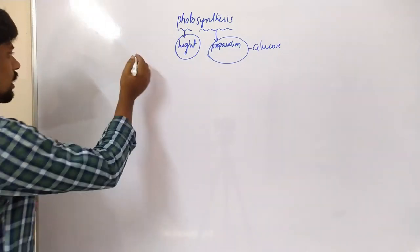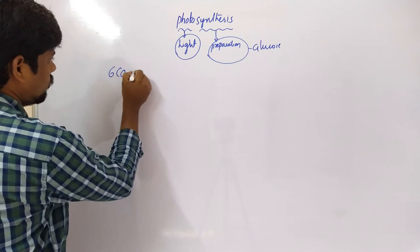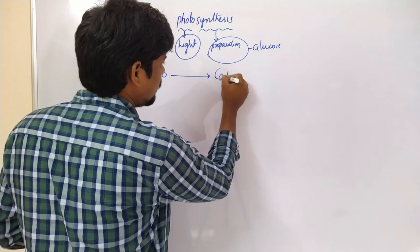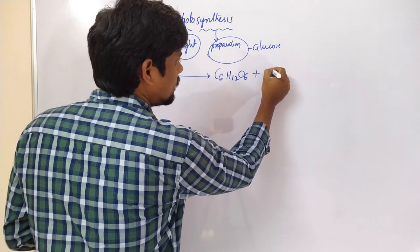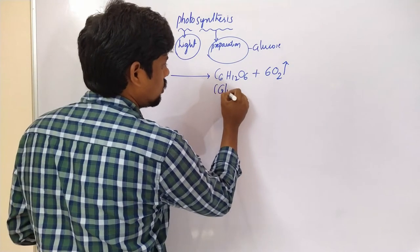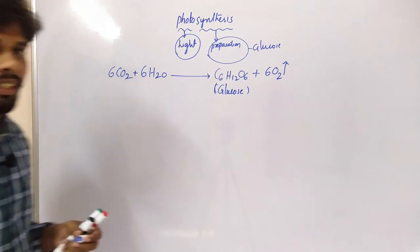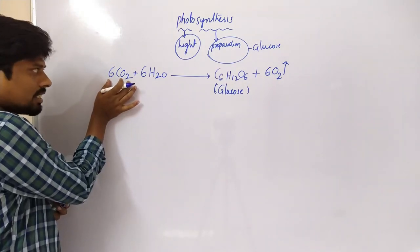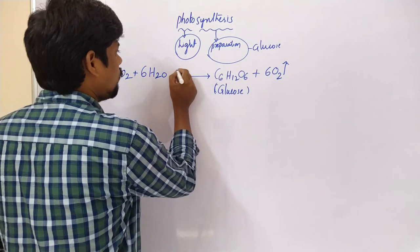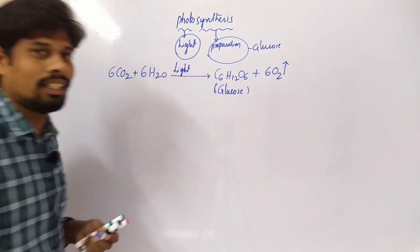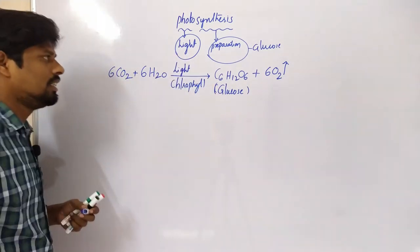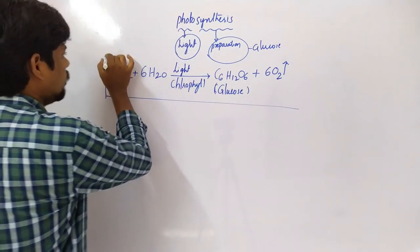Let us see the equation. See: 6 CO2 plus 6 H2O gives rise to glucose, that is C6H12O6, plus it releases 6 oxygen molecules to the atmosphere. By utilizing 6 CO2 and 6 H2O, it produces glucose and releases oxygen in the presence of light energy and chlorophyll. This is the most important equation regarding photosynthesis.